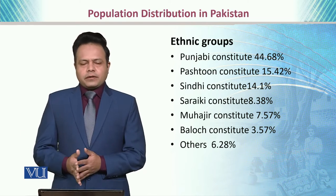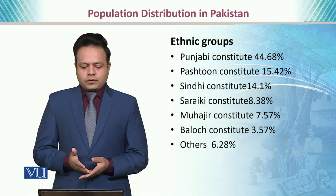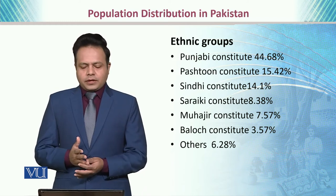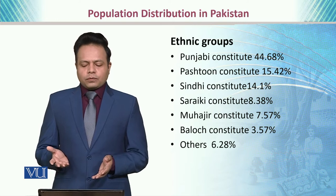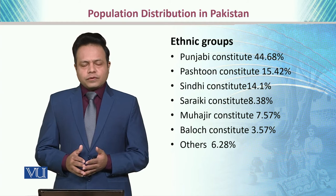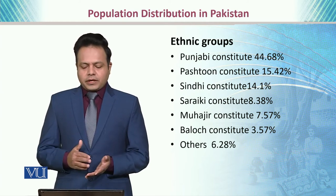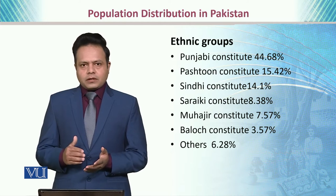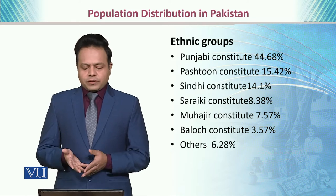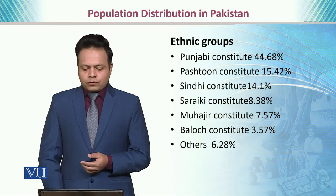The first indicator is that the population of Pakistan is diversified based on different ethnic groups. The Punjabi ethnic group constitutes 44% of the population, whereas the Pashtun constitutes 15%, Sindhis 14%, Seraiki 8.38%, Mahajirs roughly 7.5%, Baloch 3.5%, and other ethnic groups consist of 6% of the total population.